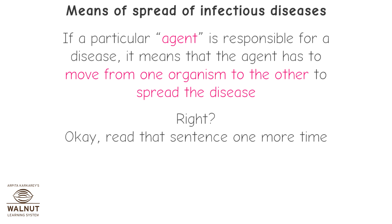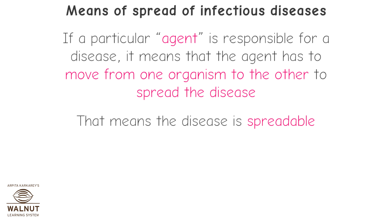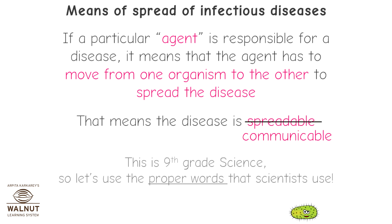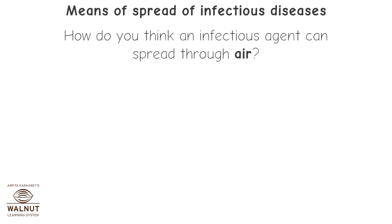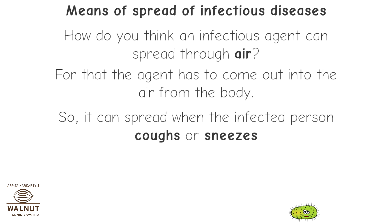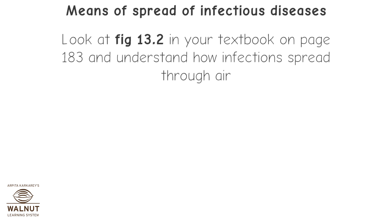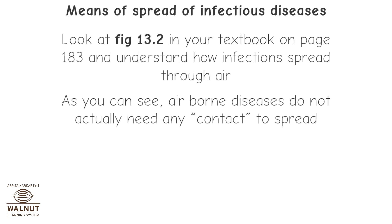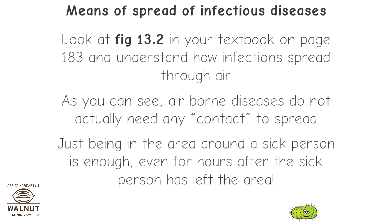If a particular agent is responsible for a disease, it means the agent has to move from one organism to another to spread the disease. That means the disease is communicable. How can an infectious agent spread through air? The agent has to come out into the air from the body, so it can spread when the infected person coughs or sneezes. Look at figure 13.2 in your textbook on page 183. Airborne diseases do not actually need any contact to spread — just being in the area around a sick person is enough, even hours after the sick person has left.